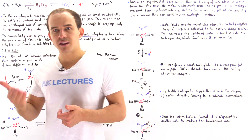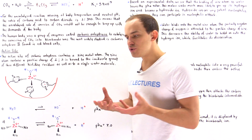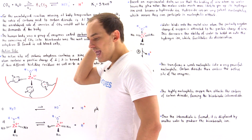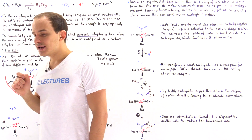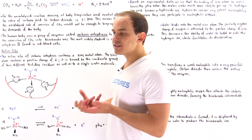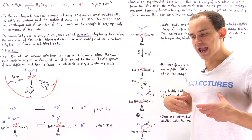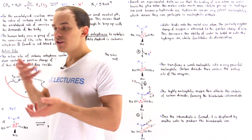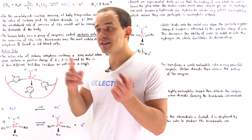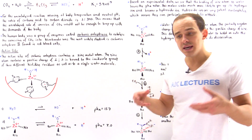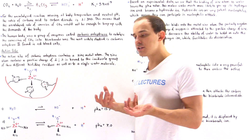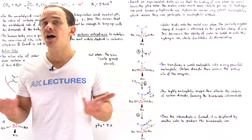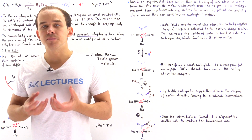Now the problem with aerobic cellular respiration is it produces a waste byproduct, namely carbon dioxide. Carbon dioxide cannot actually be used by the cell in any useful manner. And so all these trillions of cells, which use these food particles to metabolize them into ATP, produce these CO2 molecules and essentially dump them into the blood plasma.